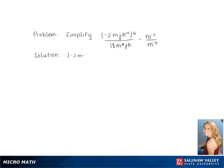To simplify negative 2mjk to the 4th raised to the 6th power over 18m to the 6th jk, times m to the negative 3 over m to the negative 4, we start by simplifying the top of the fraction by distributing the power 6.